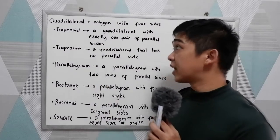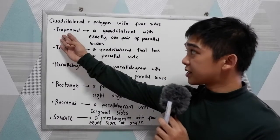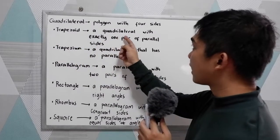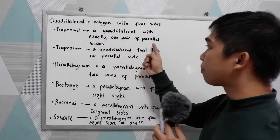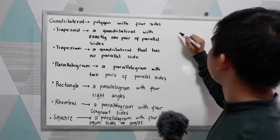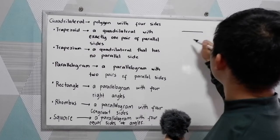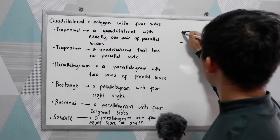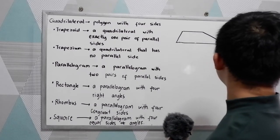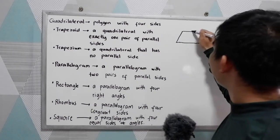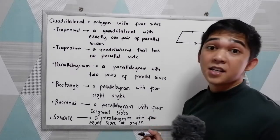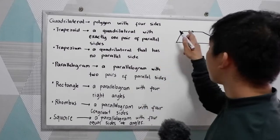We have different kinds of quadrilateral. First, we have the trapezoid. A trapezoid is a quadrilateral with exactly one pair of parallel sides. So if we're going to draw a trapezoid, it can be like this one. This side is parallel to this one — they are a pair, but not necessarily equal. They are just parallel.